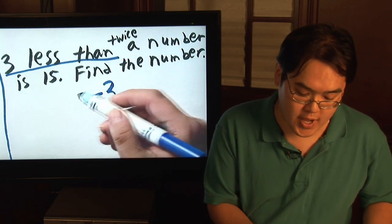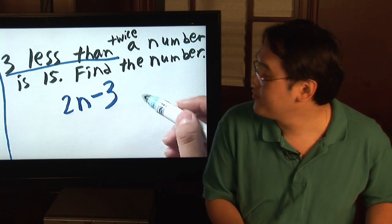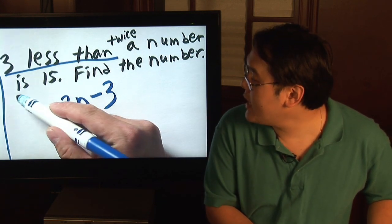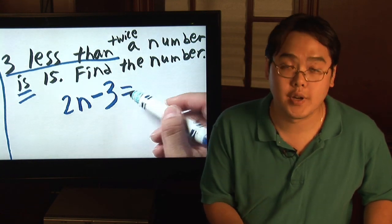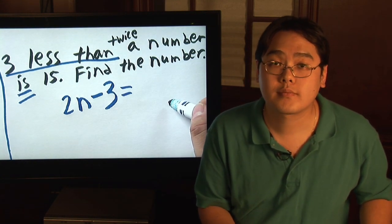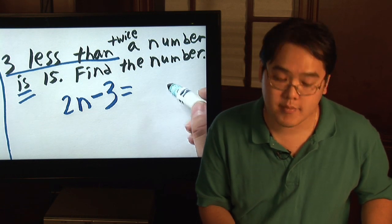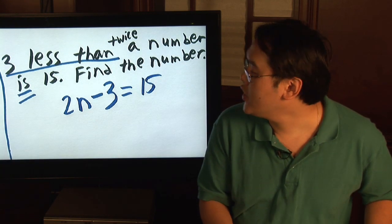Let's call the number n. So you have 2n. Now, 'is' will always mean equal sign. So put an equal sign right after the three. And then fifteen, you now have fifteen.